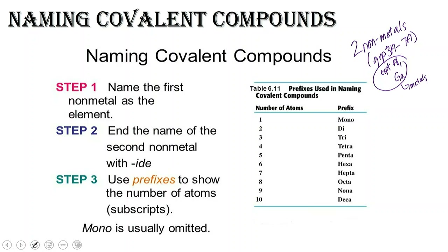For both elements in the compound you're going to give them a prefix. The first element keeps its name and you add the prefix. The second element — you drop the ending of the name and add '-ide'. If there is only one of the first element, you don't add 'mono'. Mono is usually omitted on the first element, not the second one.